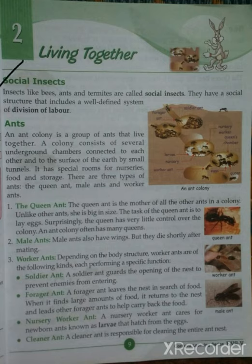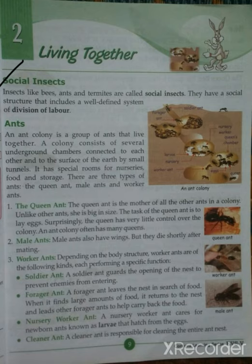The first heading is social insects. Insects like bees, ants, and termites are called social insects. They have a social structure that includes a well-defined system of division of labor. Social insects are those insects that live together in a colony and divide their work among themselves.